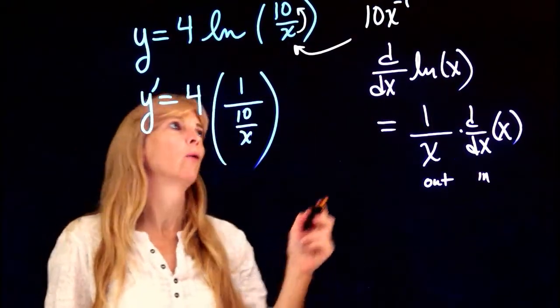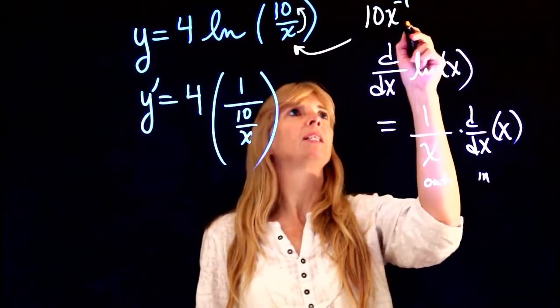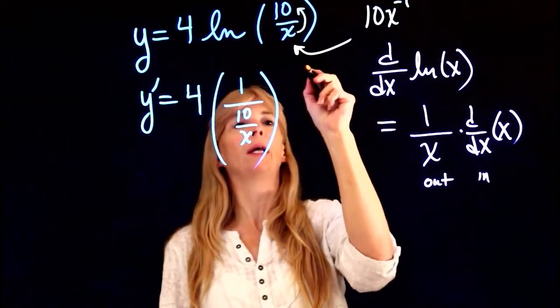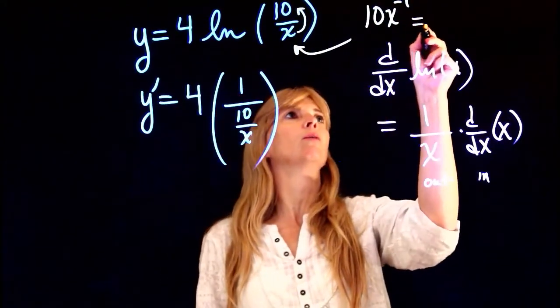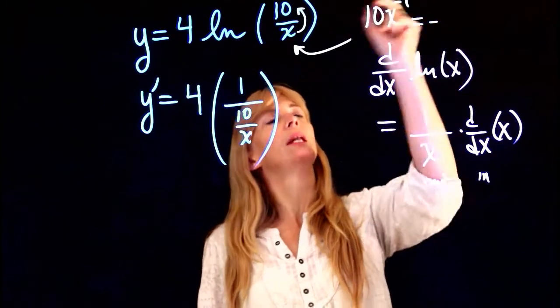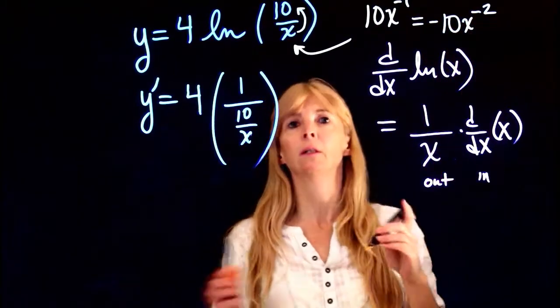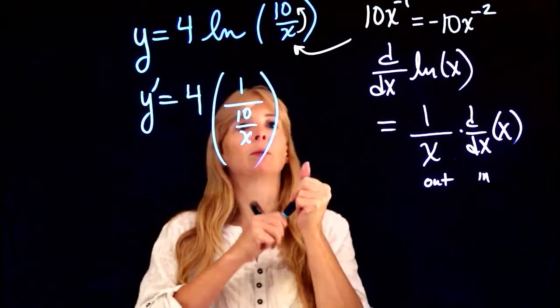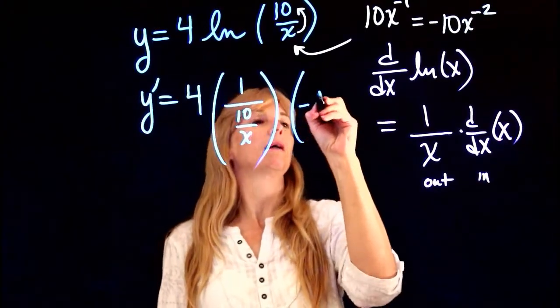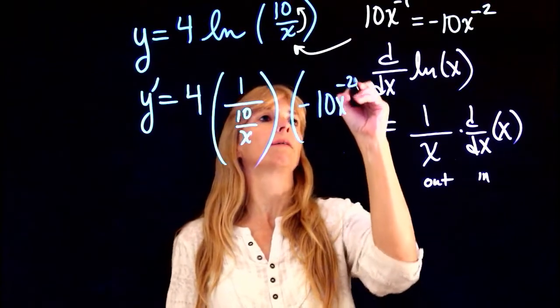All I did was bring that power up. So if I have 10x to the negative 1 in here, then for the derivative, I would bring the negative 1 down and then subtract 1. So this becomes negative 10x to the negative 2.